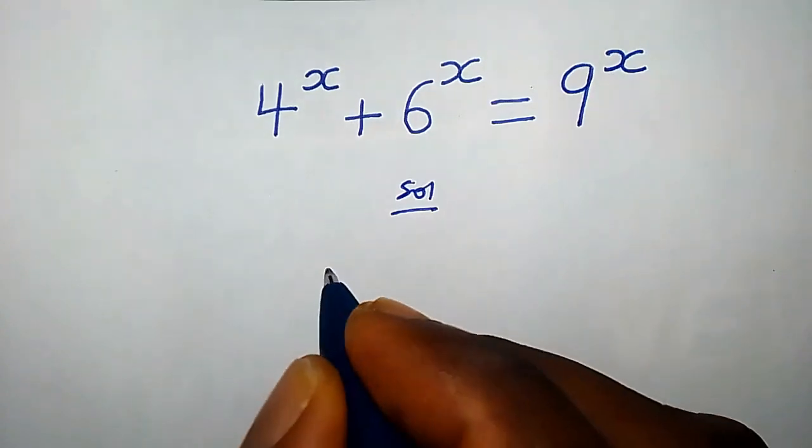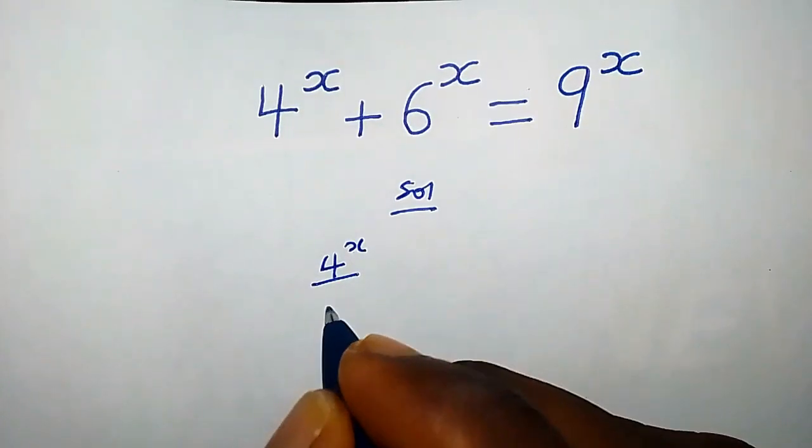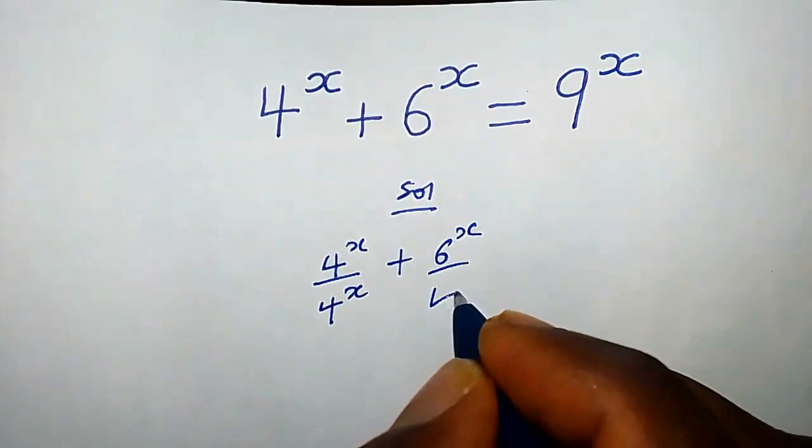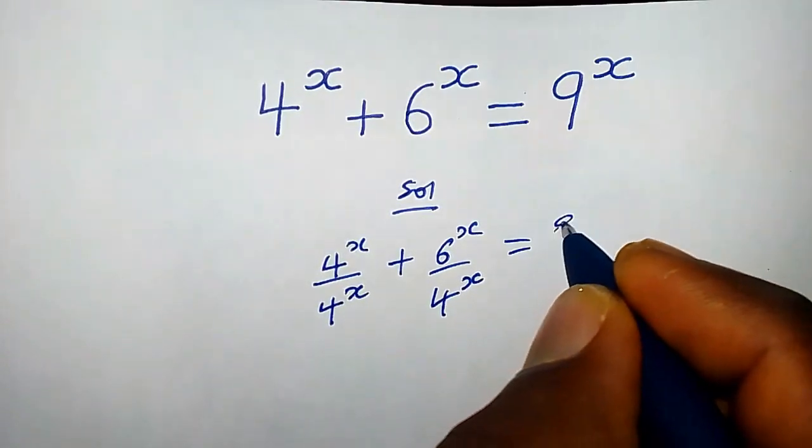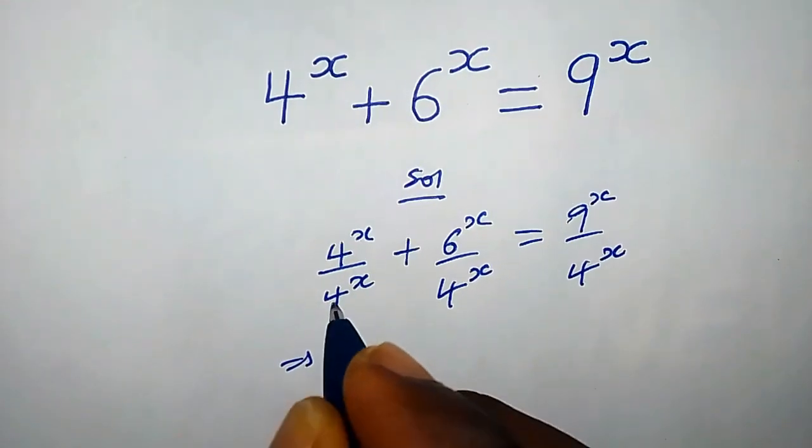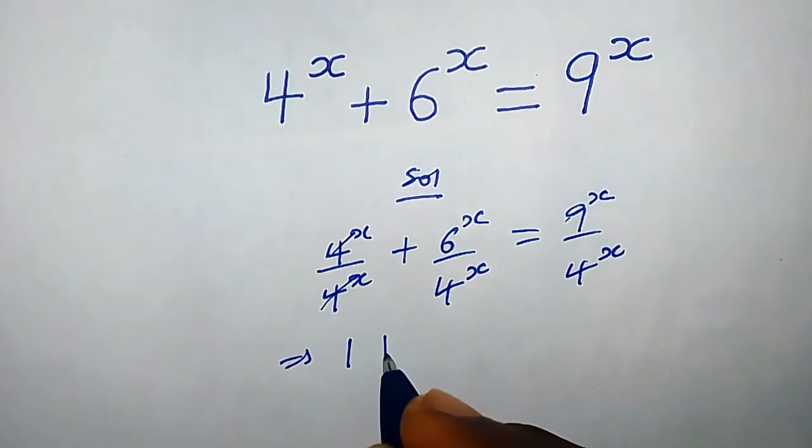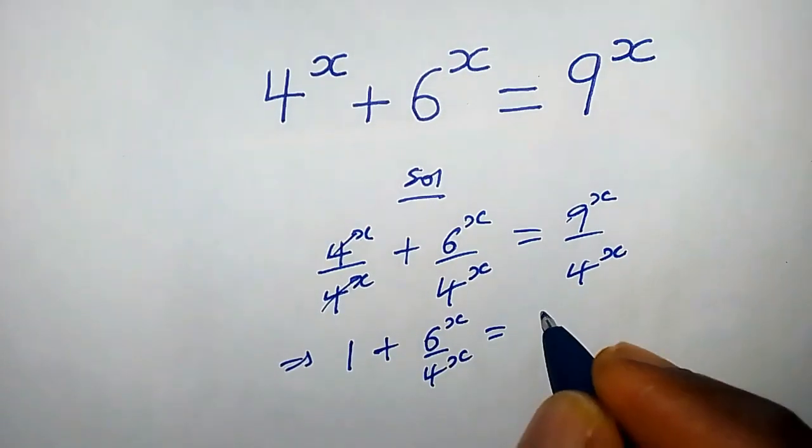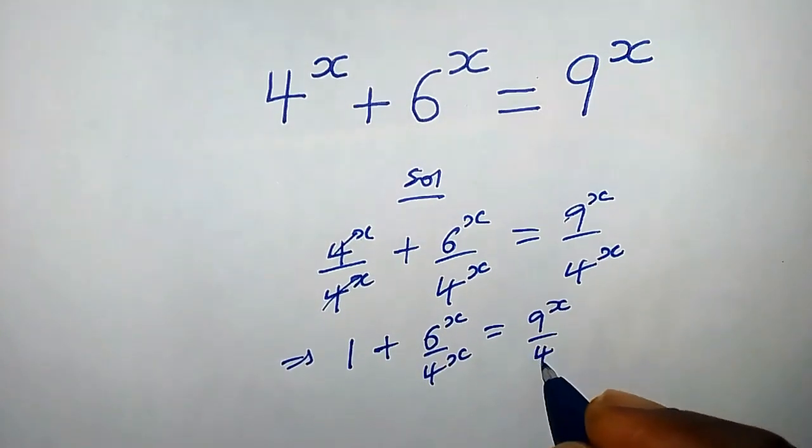Divide both sides by 4^x. We have 4^x over 4^x plus 6^x over 4^x equals 9^x over 4^x. This simplifies to 1 plus 6^x over 4^x equals 9^x over 4^x.